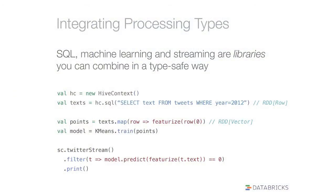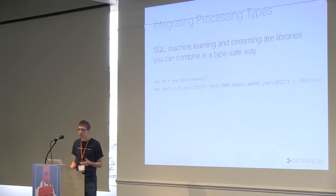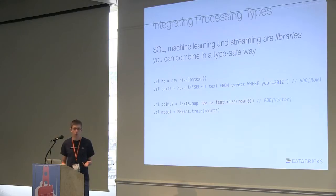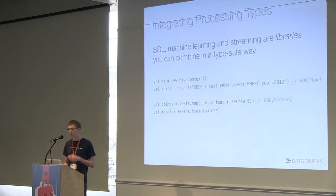On top of the basic collection stuff, you have these rich libraries that you can integrate together for different types of processing. RDDs can contain any type of Scala object, and our libraries just operate on these RDDs. For example, if you want SQL, you have a Hive context, run a SQL query, and get back an RDD of row objects. Once you have these objects, you can start a map on them using the core API — maybe turning them into vectors to do some machine learning.